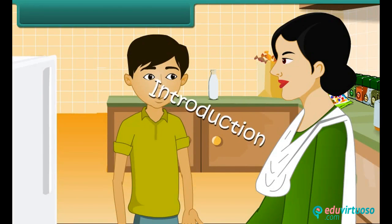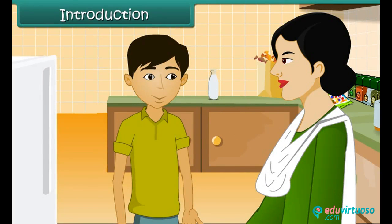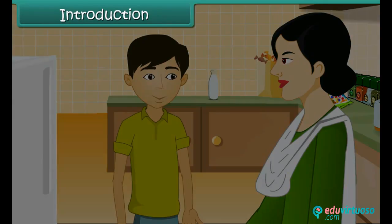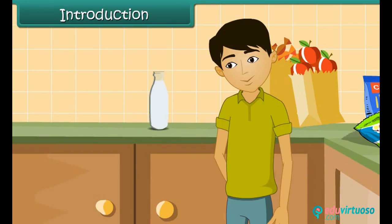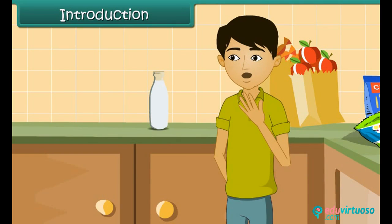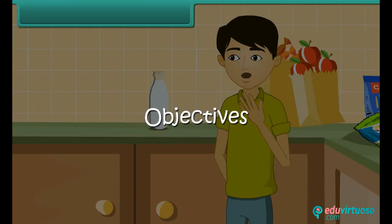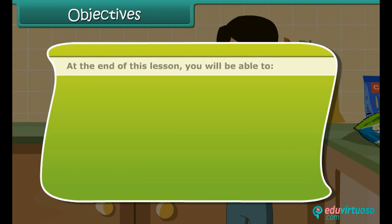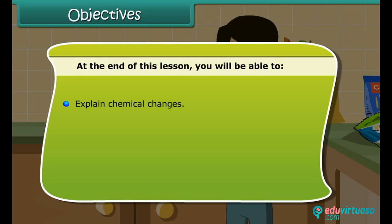Introduction: At night your mother asks you to keep the milk bottle in the refrigerator, but you forget to do so. Next morning you see that the milk has spoiled. Can you get the milk back from the spoiled one? Objectives: At the end of this lesson you will be able to explain chemical changes and give examples of chemical changes.